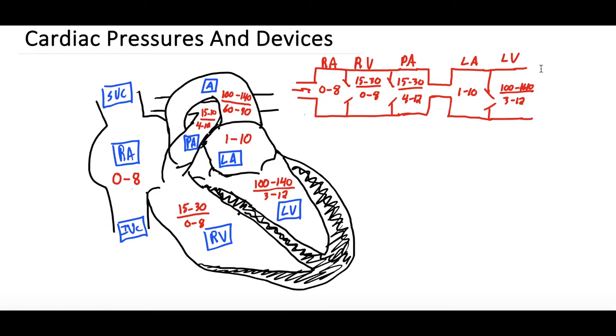And then it travels through one more valve into the aorta, which is the last place it goes. Into the aorta, where the pressure is the systemic pressure, 100 to 140, over 60 to 90. So that kind of traces the blood flow just in a different box format than we did with the actual drawing of the heart itself.